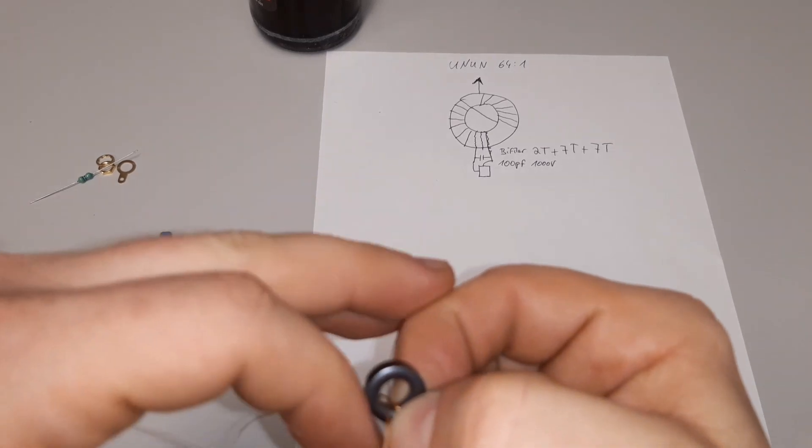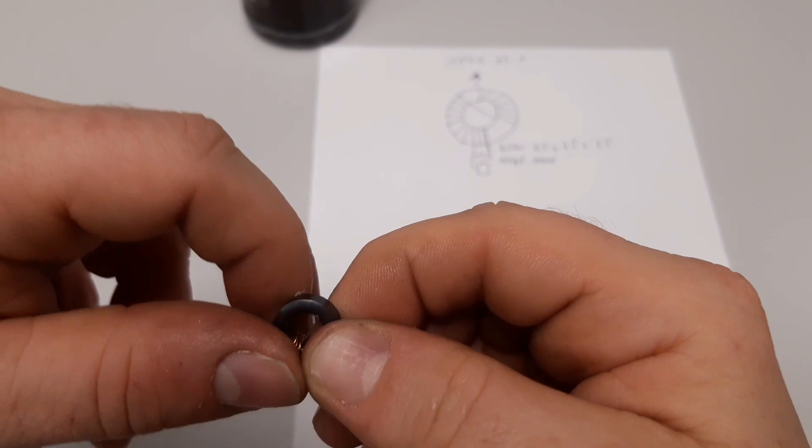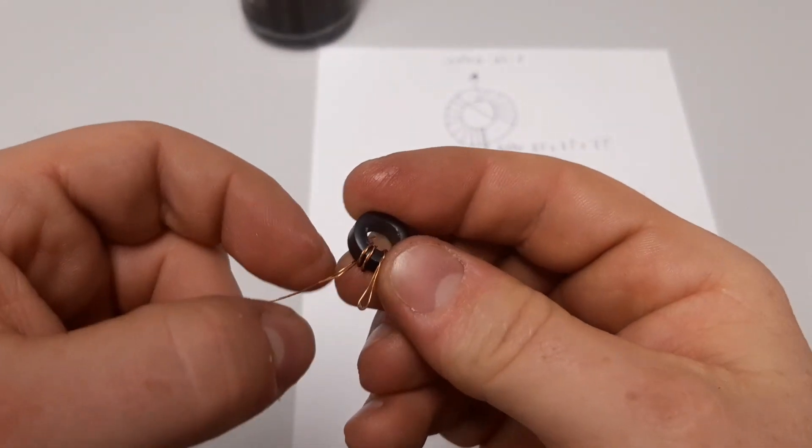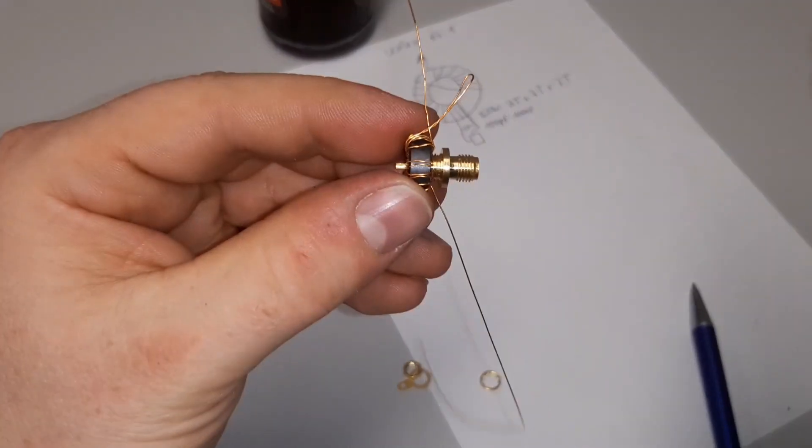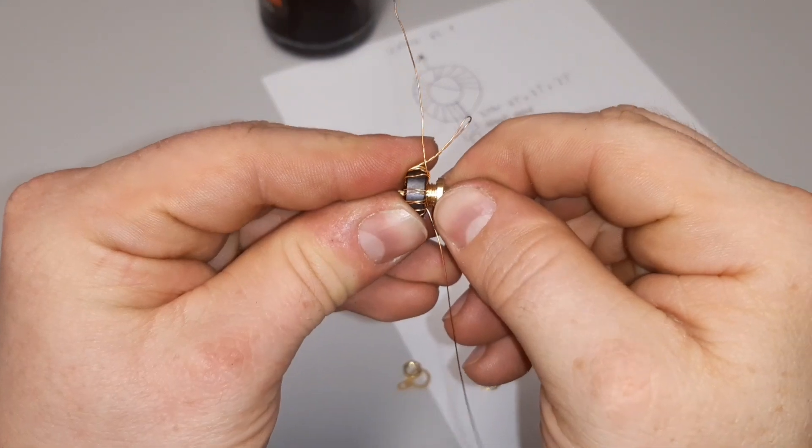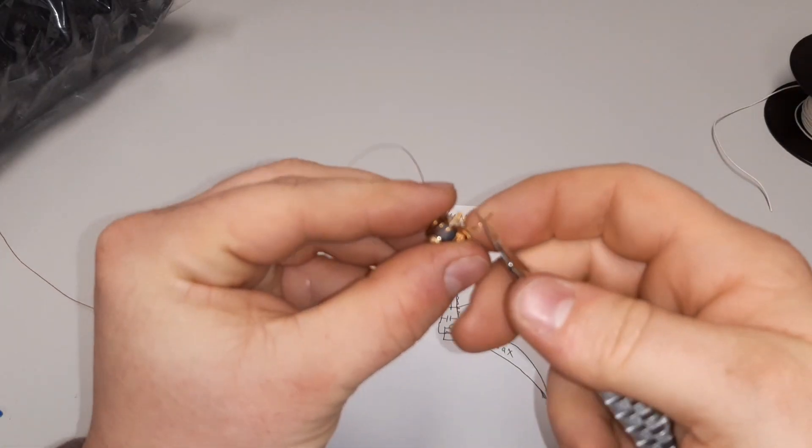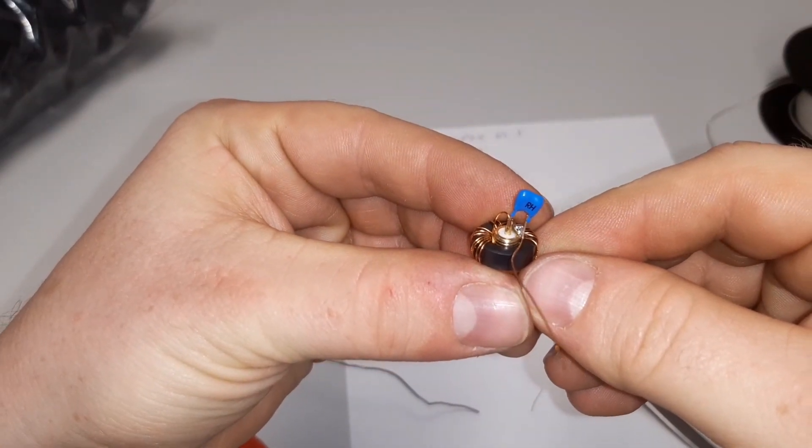That's our toroid. Number one. That's perfect. That fixes perfectly in there. Look at this. Like this. And now I have to solder that.